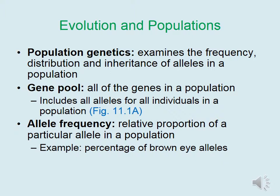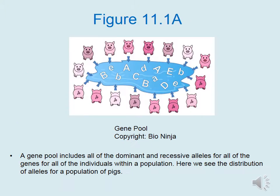This leads us to the gene pool, which refers to all of the genes in a population — including all alleles or alternate gene forms for all individuals within the population. We can examine the allele frequency, which is the relative proportion of a particular allele in a population. For instance, in humans we could look at the percentage of brown eye alleles versus other eye color alleles. A gene pool includes all dominant and recessive alleles for all genes for all individuals within a population.